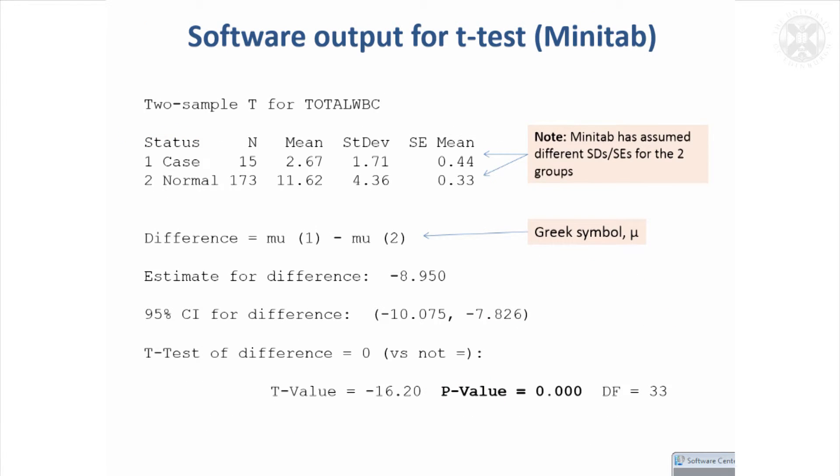So I thought at this stage it was quite helpful maybe to give a feel for the kinds of things software packages are going to throw at you when you manage to get the coding right or select from the menus how to do your tests, you've got the data in the right places. Because in my view, a lot of the packages, the output isn't very easy to read and they tend to give things that you don't need or they haven't explained properly. So I'll just show the output in a couple of packages that you'd get from doing a t-test.